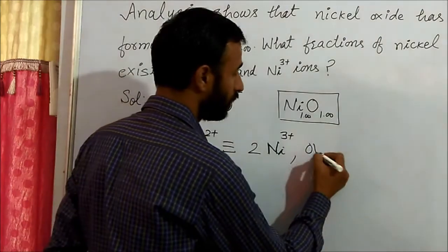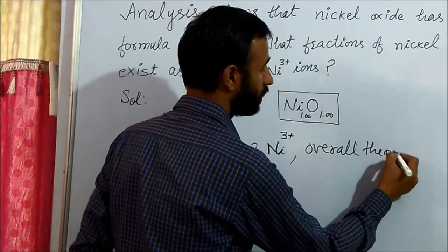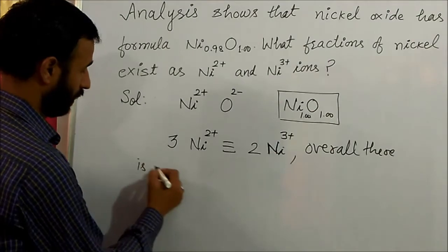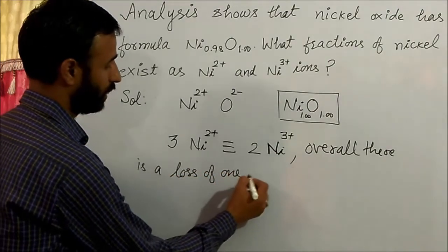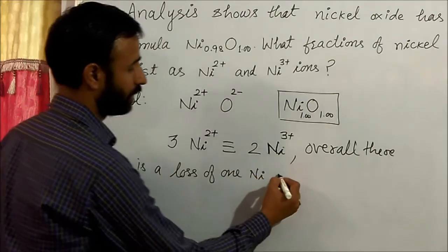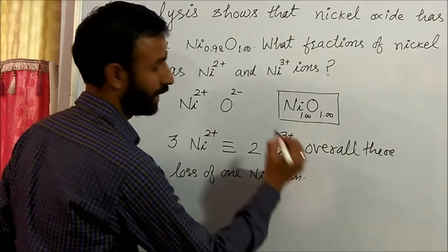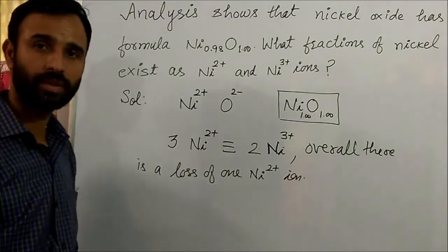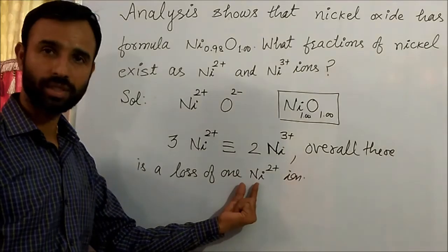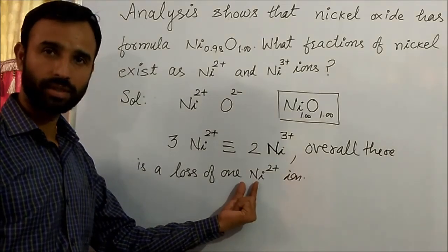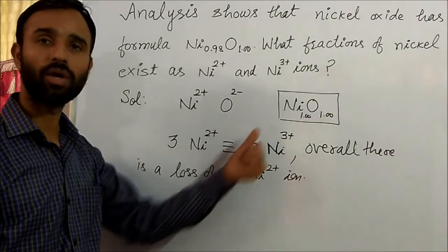So overall, there is a loss of one Ni²⁺ per substitution event. If one nickel is lost and three Ni³⁺ signs are involved, then the number of Ni³⁺ is two times the loss — double this number.